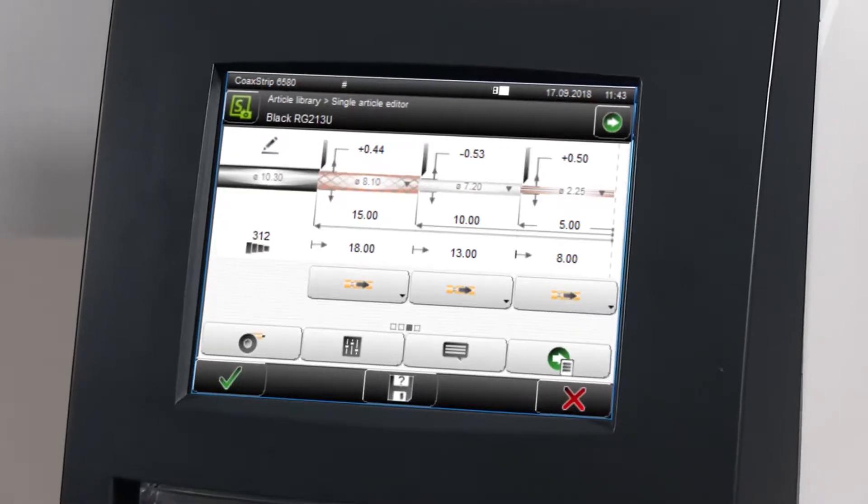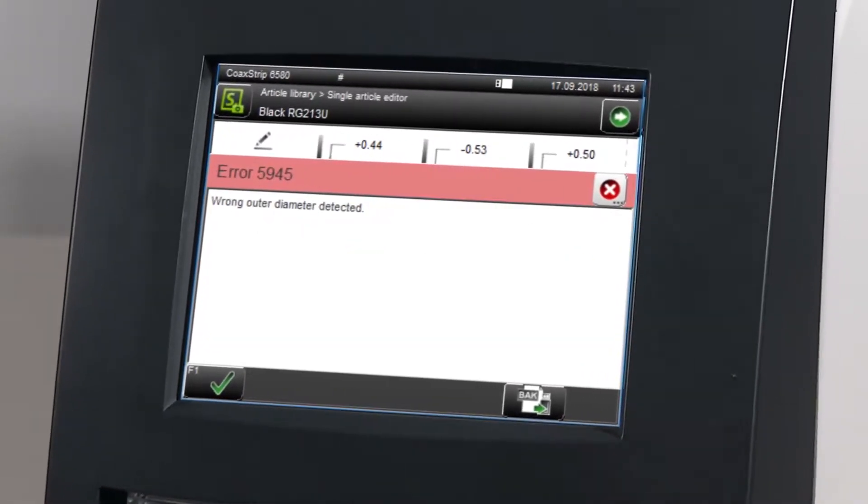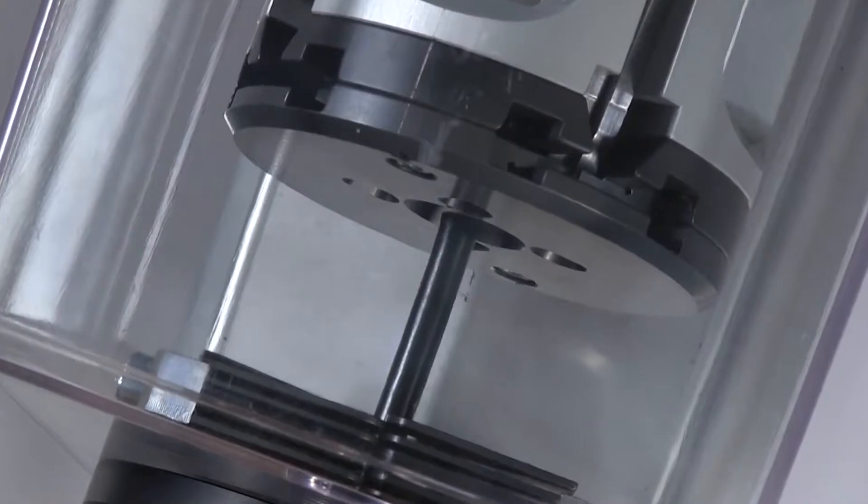For example, the cable diameter verification prevents an incorrect cable size from being processed.